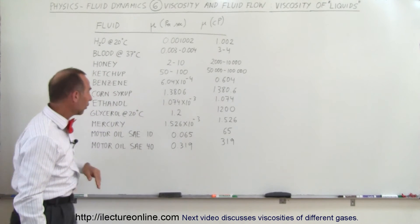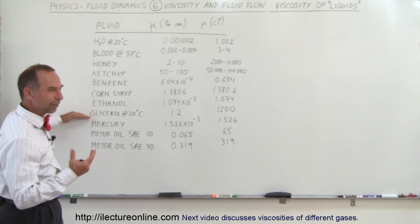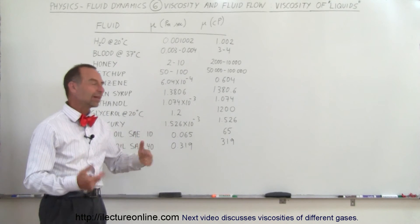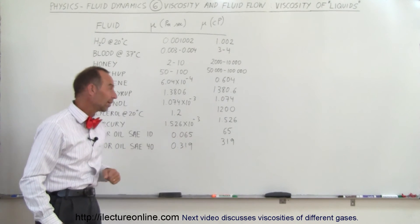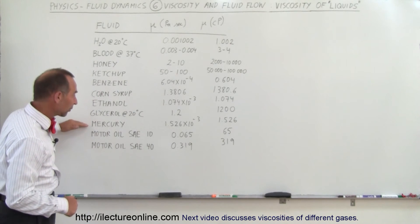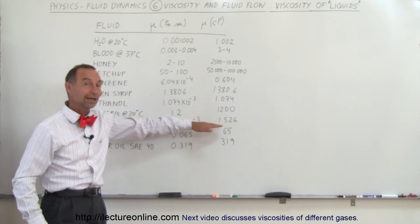Glycerol is that very sticky substance that has a lot of viscosity. We use it in the laboratory in class a lot—1,200 times the viscosity of water. Mercury, amazingly enough, is just slightly greater than the viscosity of water.